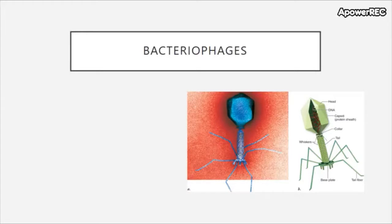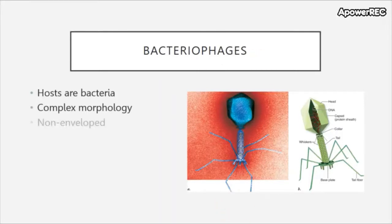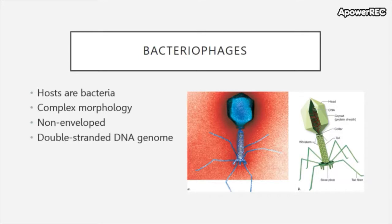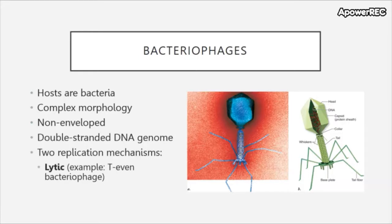Bacteriophages have bacteria as their hosts. They have a complex morphology, are non-enveloped, have double-stranded DNA as their genome, and have two replication mechanisms: lytic — an example being the T4 bacteriophage — and lysogenic, an example being the lambda phage.